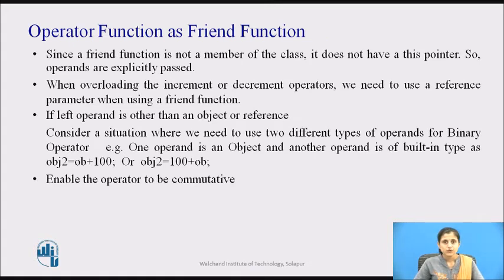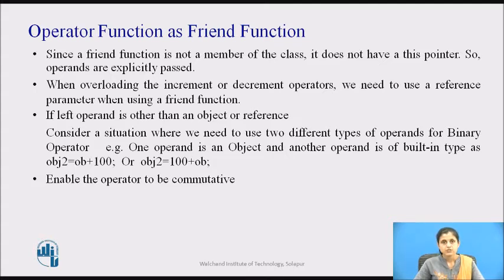We can overload an operator by using a non-member function, which is usually a friend of the class. Since a friend function is not a member of the class, it does not have a this pointer. Therefore, operands are explicitly passed to the overloaded friend operator function.